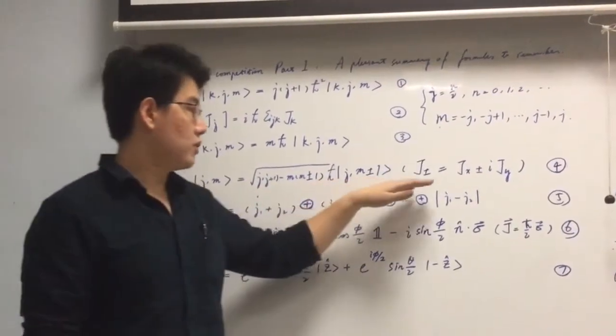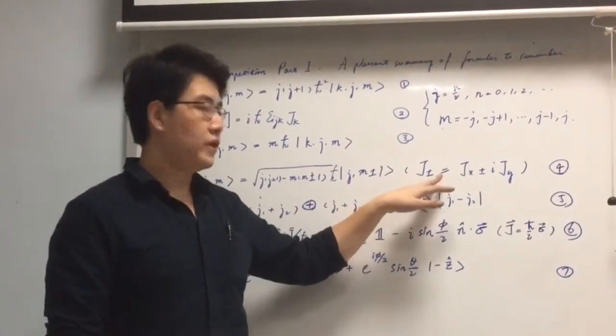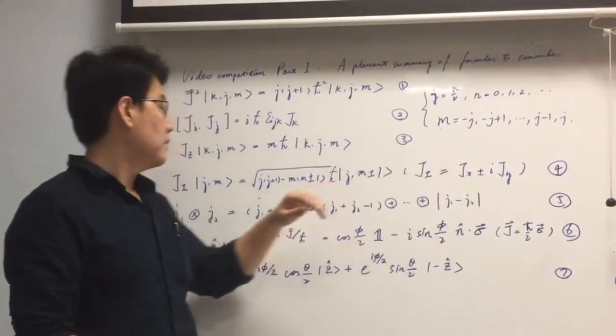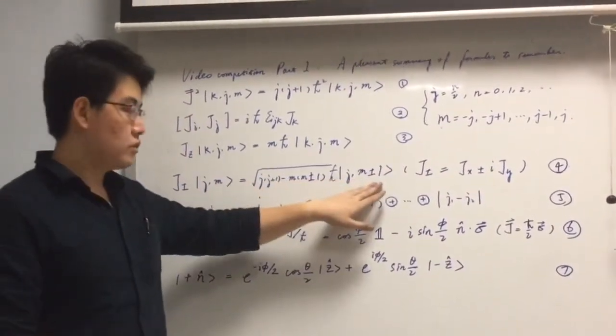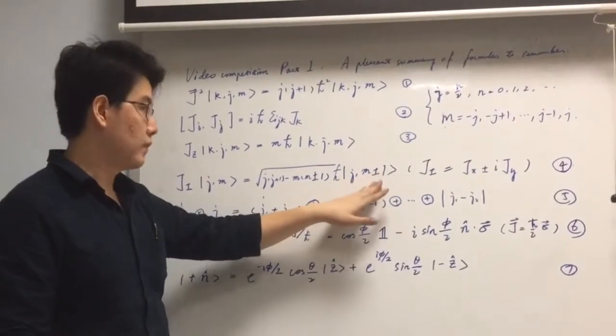We first construct the ladder operator in this way such that it can increase or decrease the spin along z-axis by one.